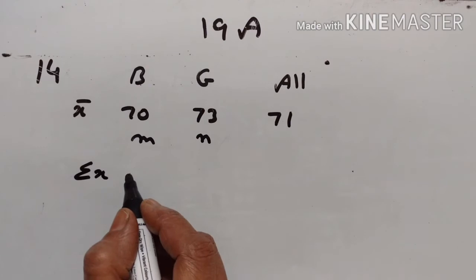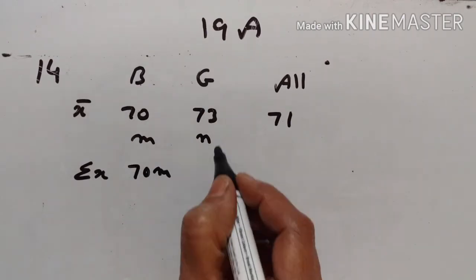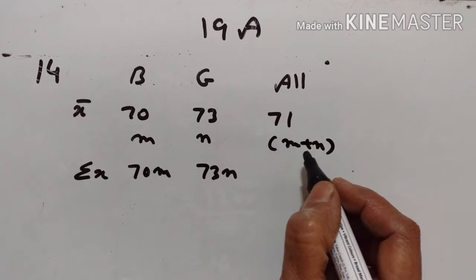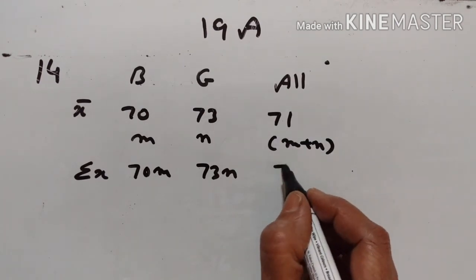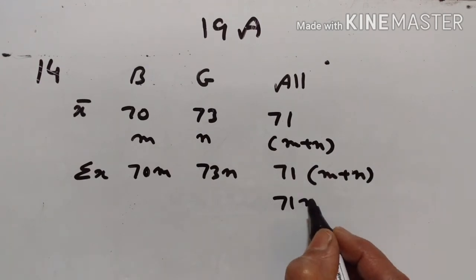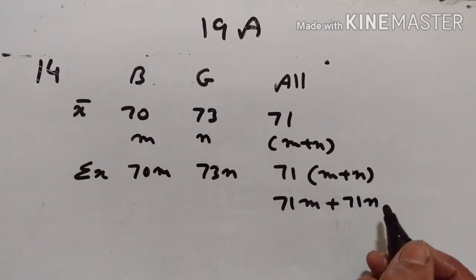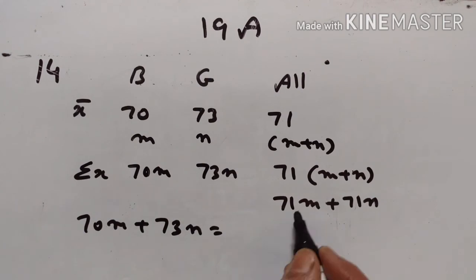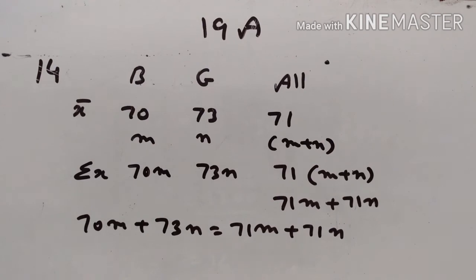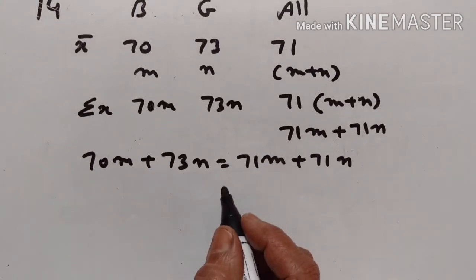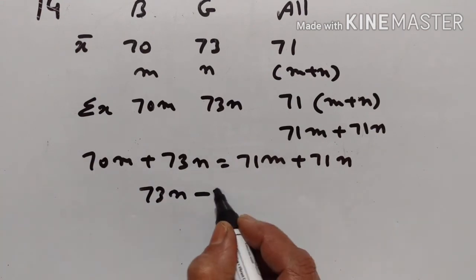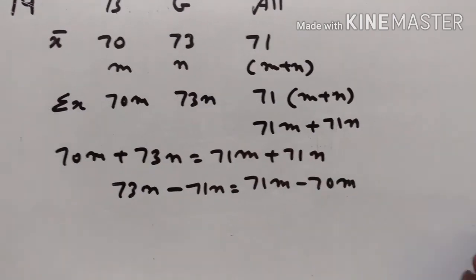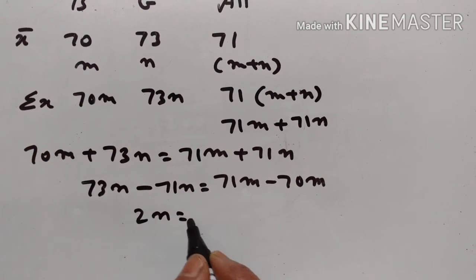The mean mark of boys is 70 and the mean mark of girls is 73. The overall mean is 71. Let m be the number of boys and n be the number of girls. Sum for boys is 70m, sum for girls is 73n. Total sum is 71 times (m plus n), that is 71m plus 71n. So 70m plus 73n equals 71m plus 71n.